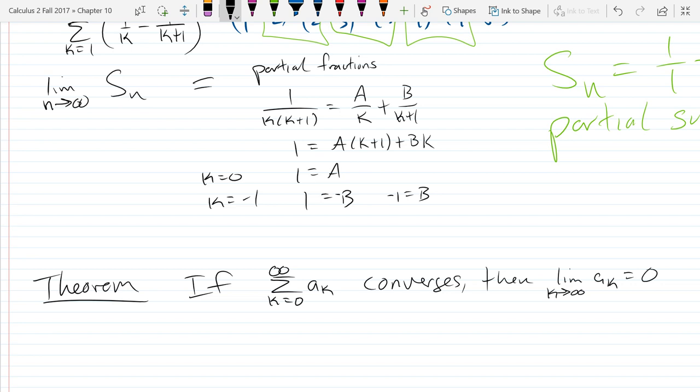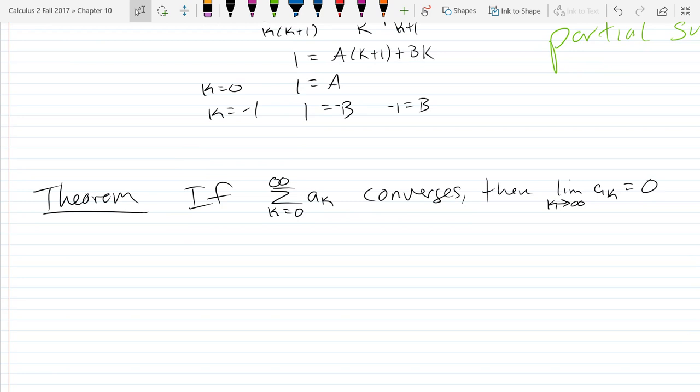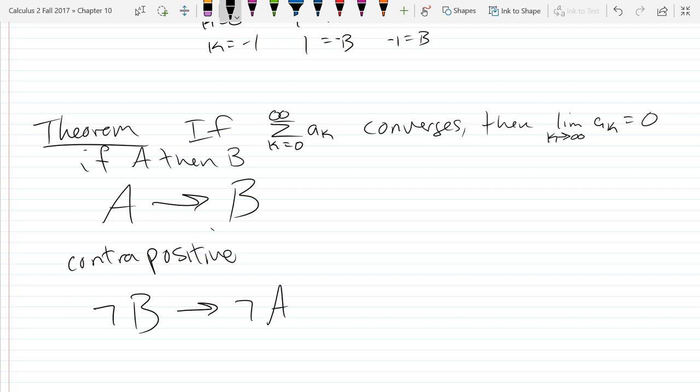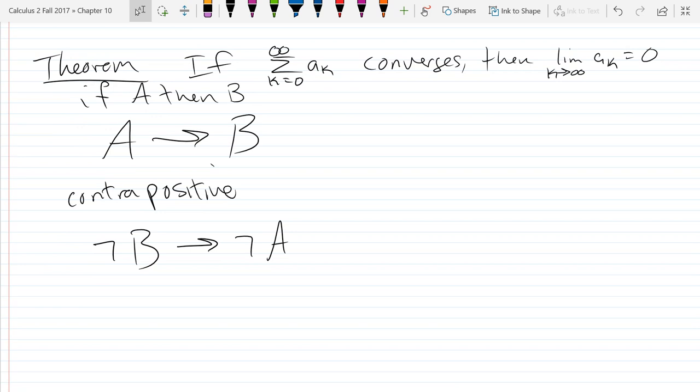So logically theorems are written, if A then B, the contrapositive is not B implies not A. So if you don't get the conclusion, then you could not have had the hypothesis. So what's the contrapositive of this theorem?